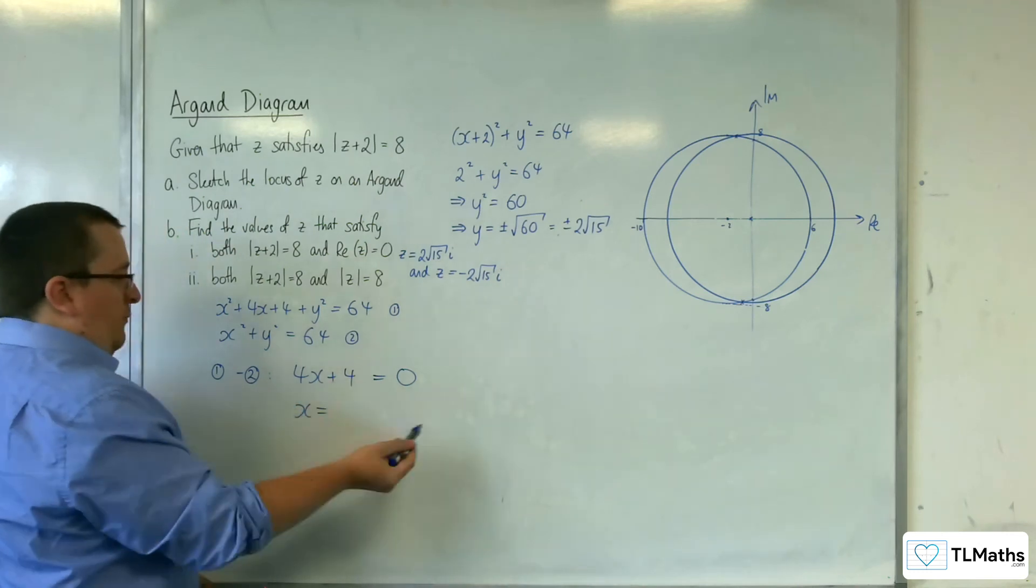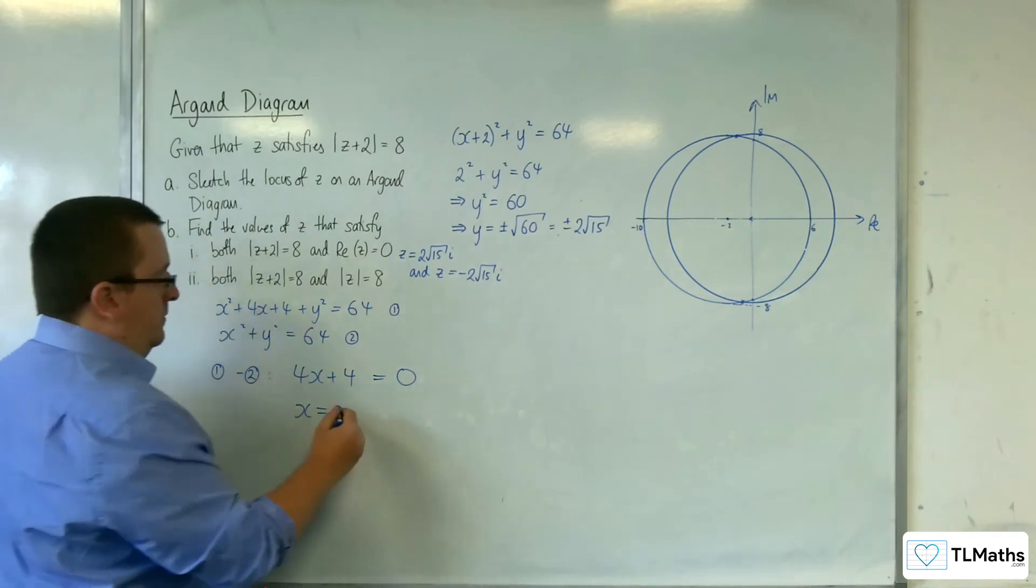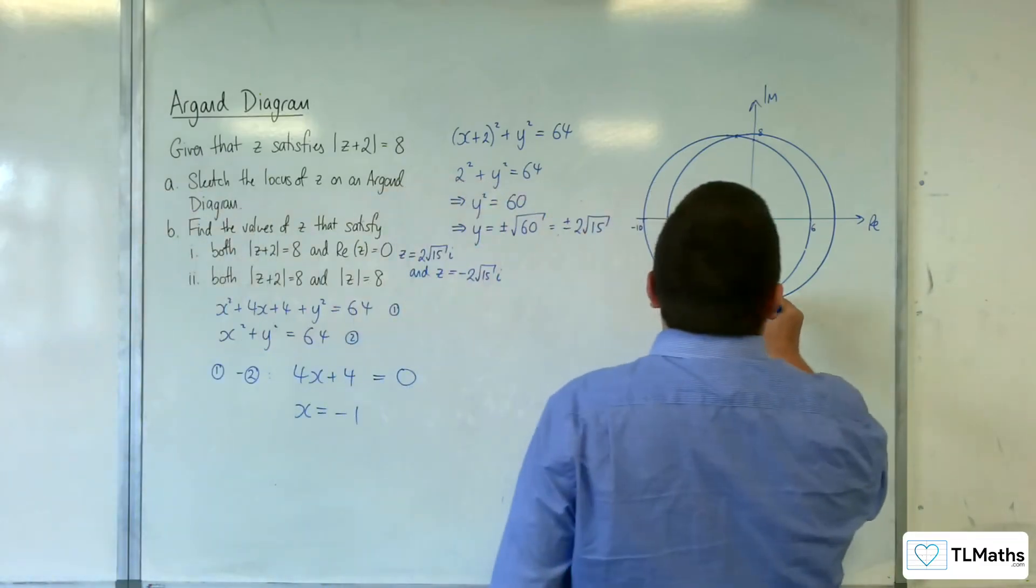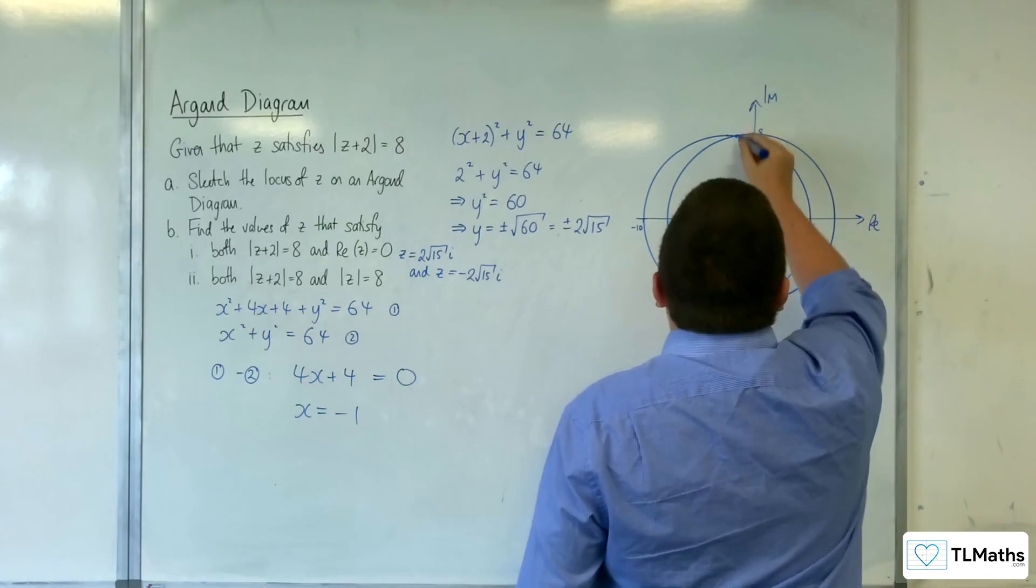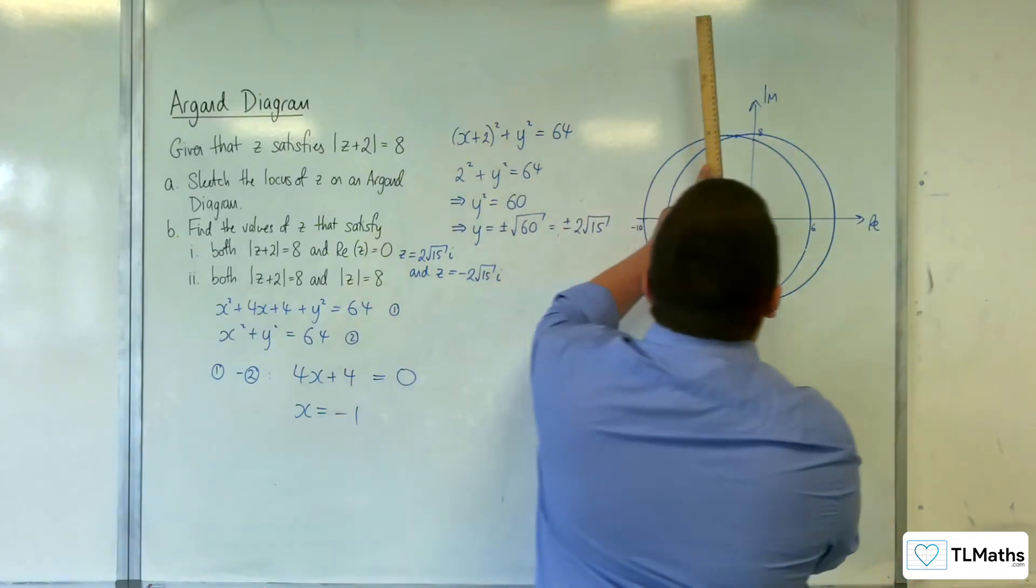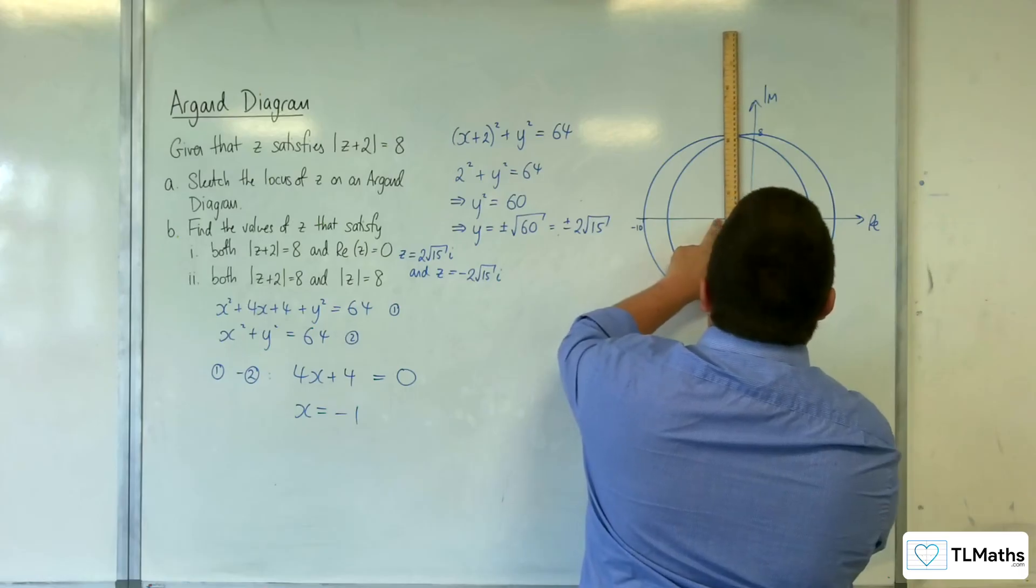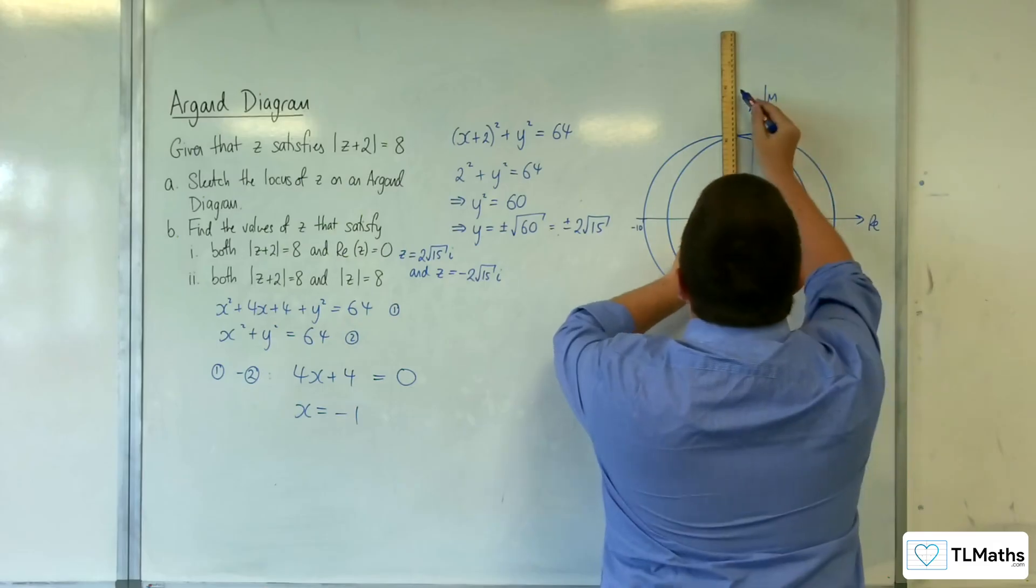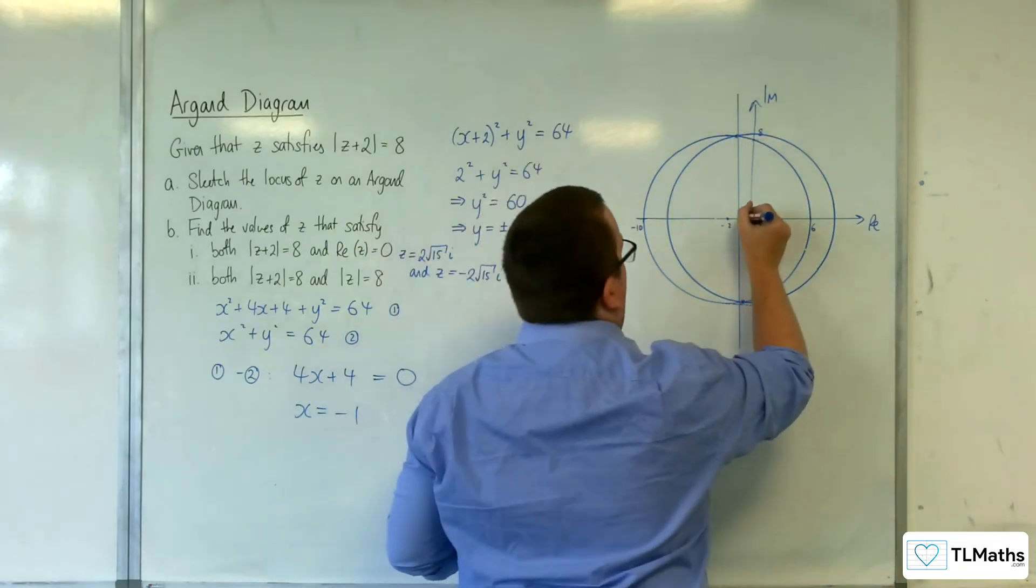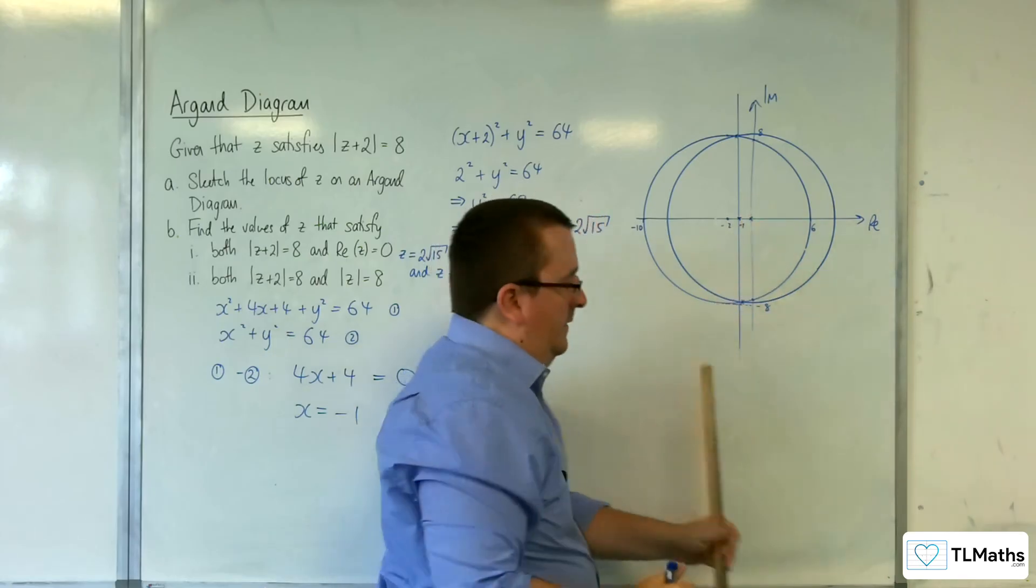OK. So, take 4 from both sides, divide through by 4. So, x is equal to minus 1 is the vertical line. It's going through those two points there. So, we know that the x coordinate... I mean, my diagram's not perfect, is it? It's meant to be a vertical line going through minus 1.